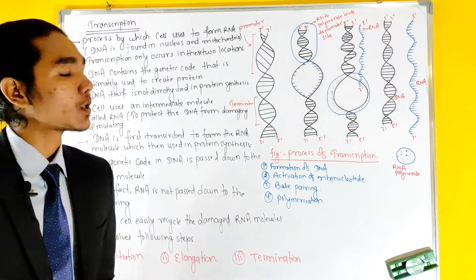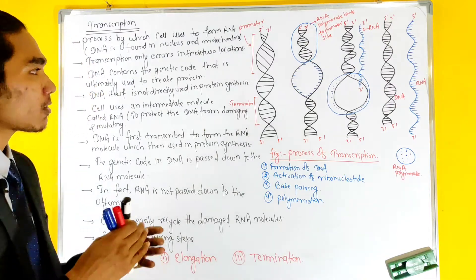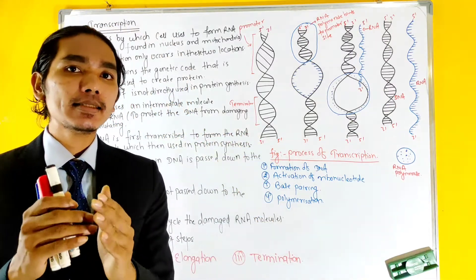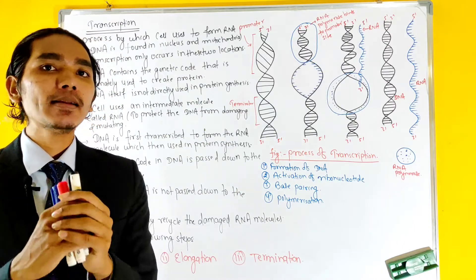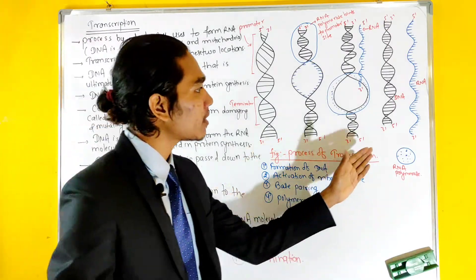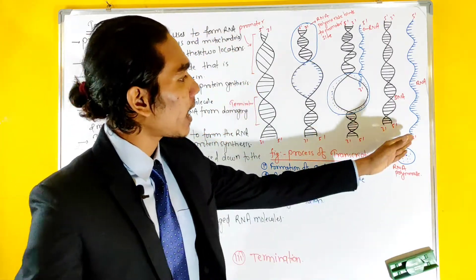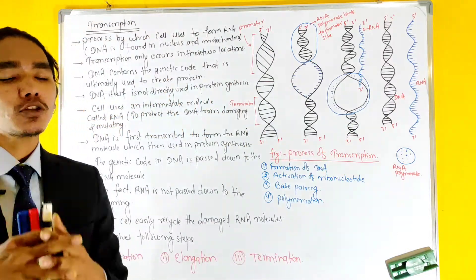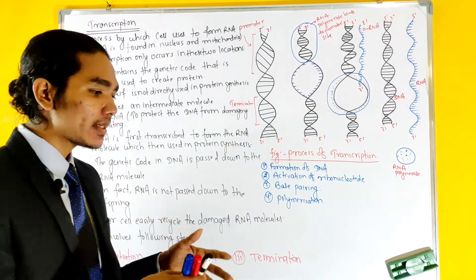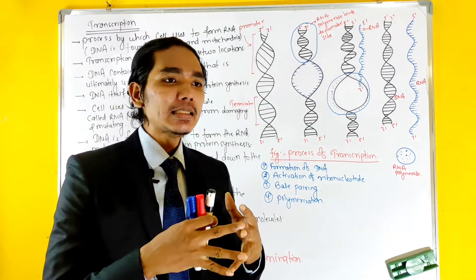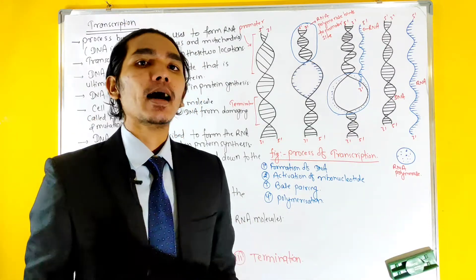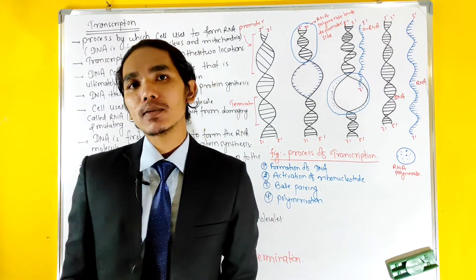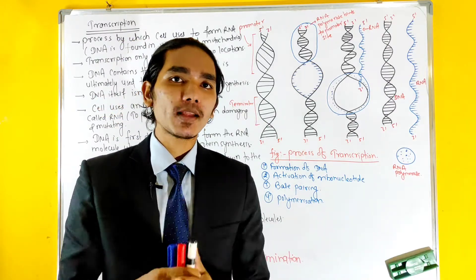Transcription means that the DNA becomes a double-stranded DNA, and it becomes an RNA process — this is transcription. In the next lecture, we will talk about DNA, RNA, and protein formation in the process, which is the central dogma theory.